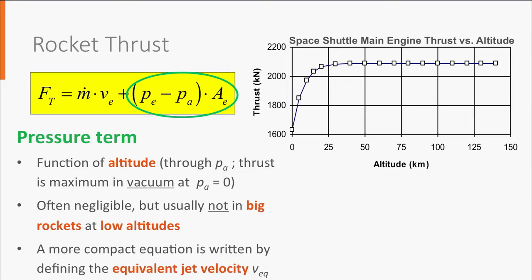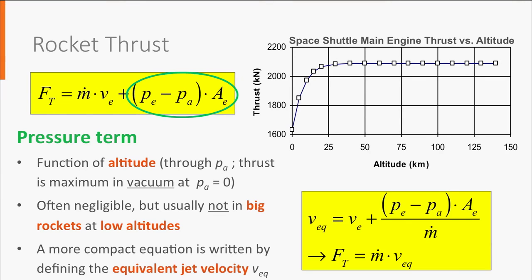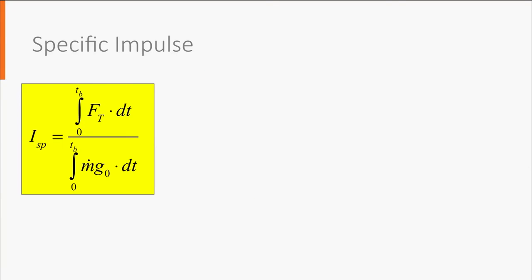In order to simplify the thrust equation, we can define an equivalent, or effective, jet velocity. This parameter takes into account both the momentum and pressure term, and allows to write the thrust in a compact way, simply as a mass flow rate multiplied by velocity. Keep in mind, however, that the equivalent jet velocity has no physical meaning. It is a pure mathematical entity used to simplify the way how equations are written.